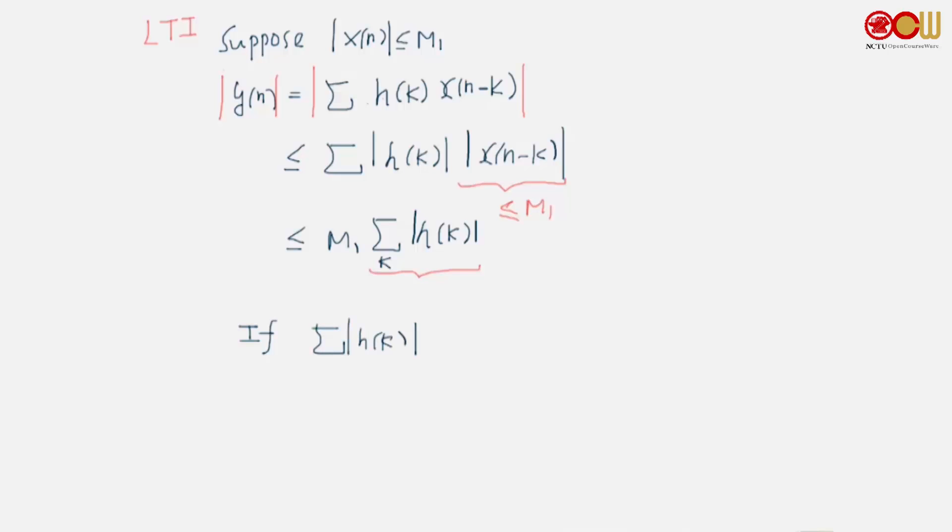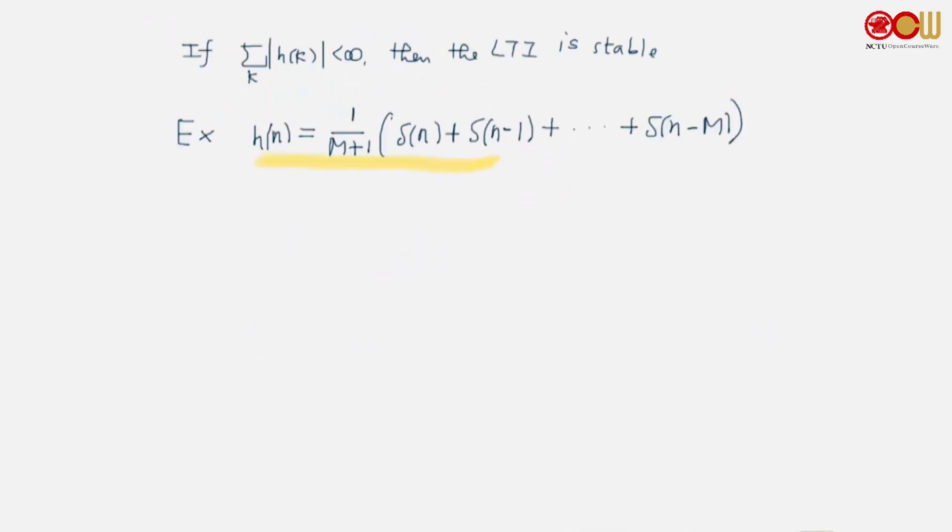Another example: the one-sided exponential sequence, h(n) = a^n u(n). Will this be absolutely summable? Yes, indeed, because a is between 0 and 1. So when we sum up the sequence, it will be 1/(1-a). When h(n) is the unit step sequence, this is not bounded, so this is not a stable sequence.